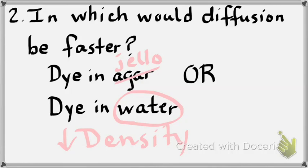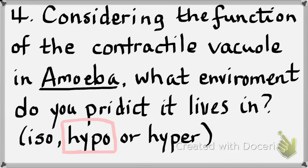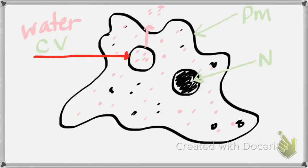Hypo means it's going to swell. Hyper means it's going to shrink. What does iso mean? Stay the same. If that wasn't on your review sheet, I just wanted to refresh your memory on those ideas.